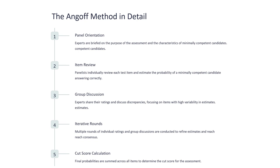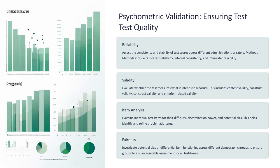The Angoff method involves a panel who are oriented and briefed on the methodology — not all faculty know this. They then start reviewing the items. It is a painful process, but necessary to set standards robust enough to withstand any challenges. It requires group discussion and iterative rounds of judgment. Generative AI can help the group craft various responses and descriptors during grading, and can also help calculate the cutoff score for pass and fail.